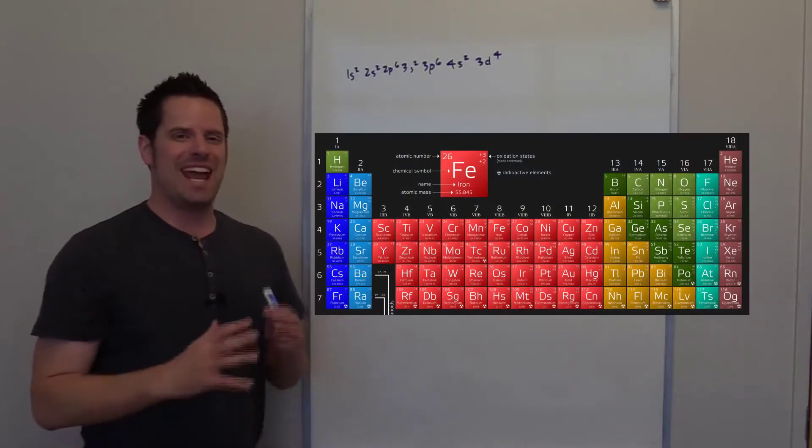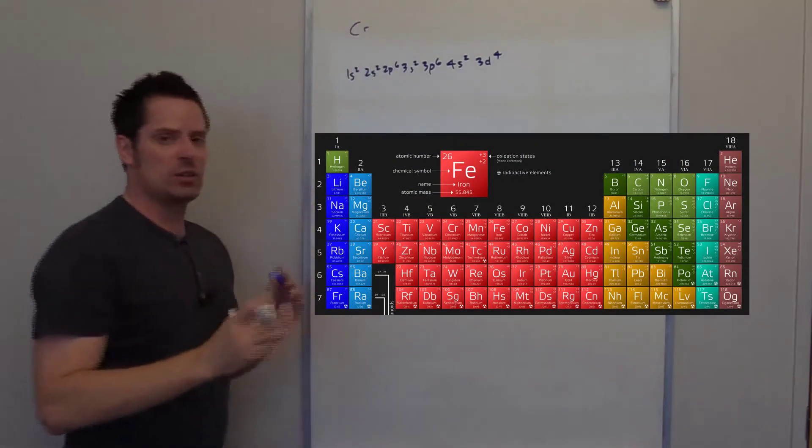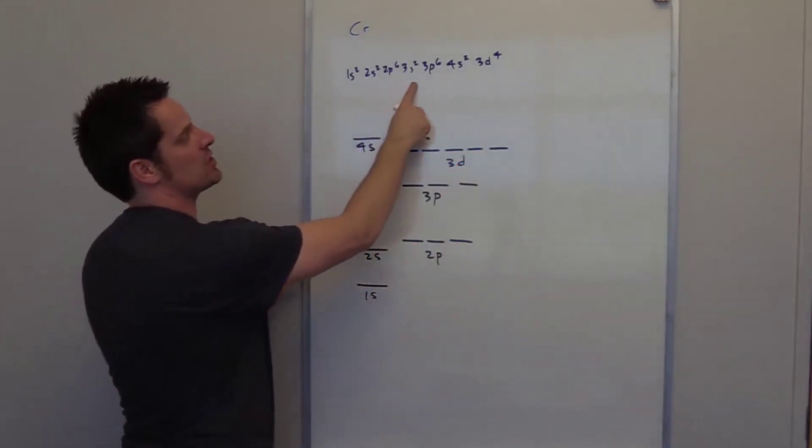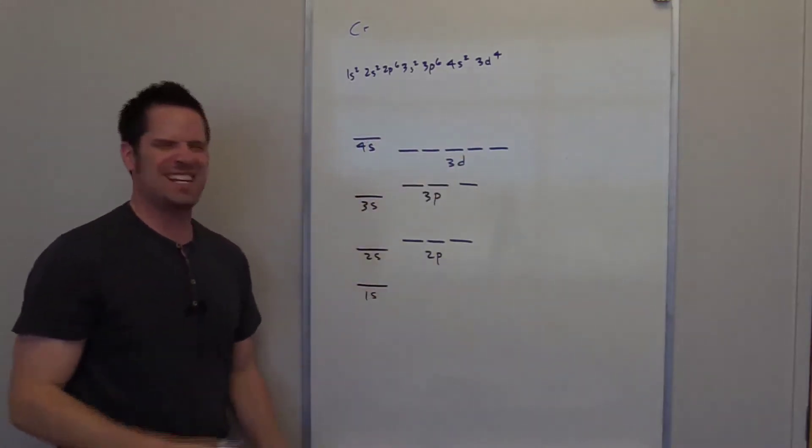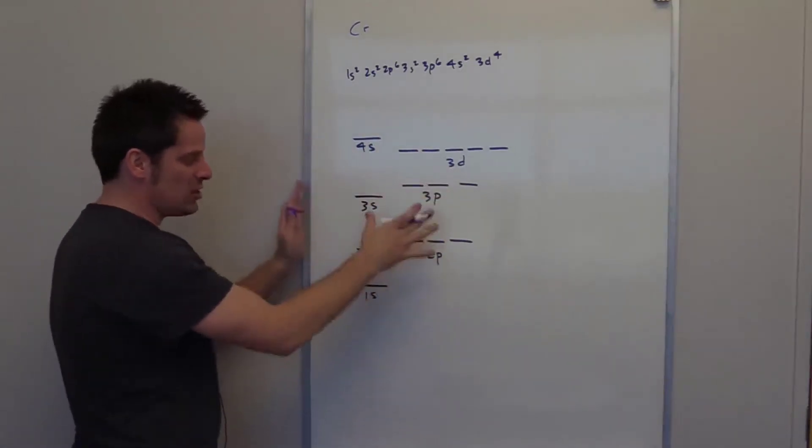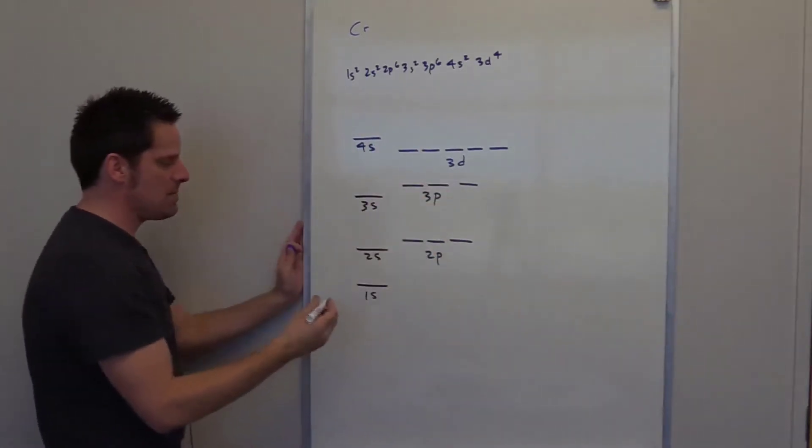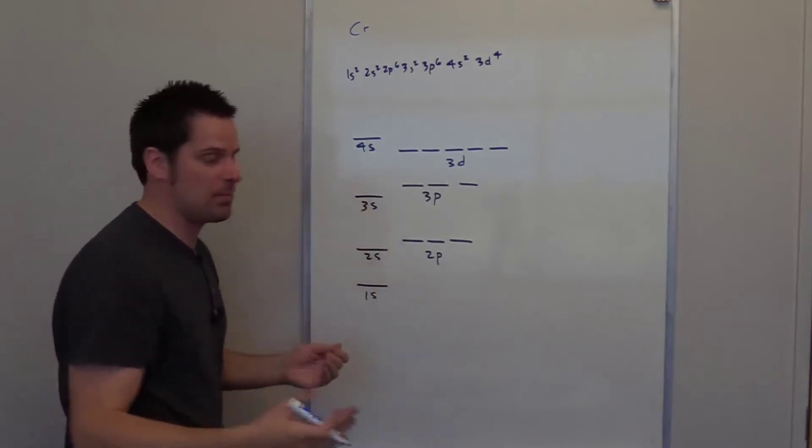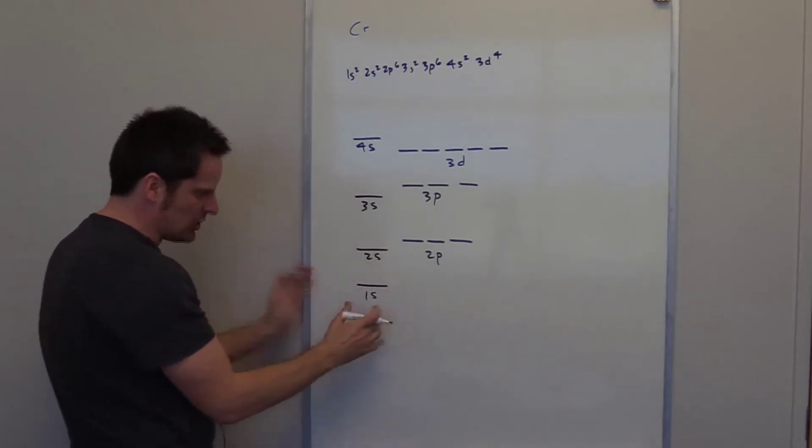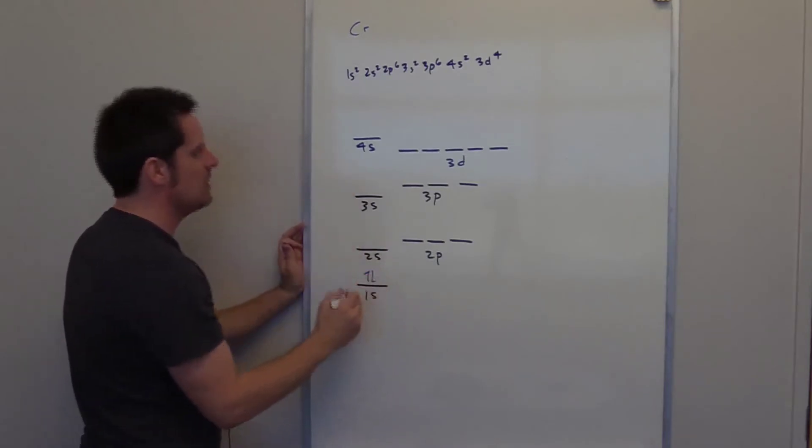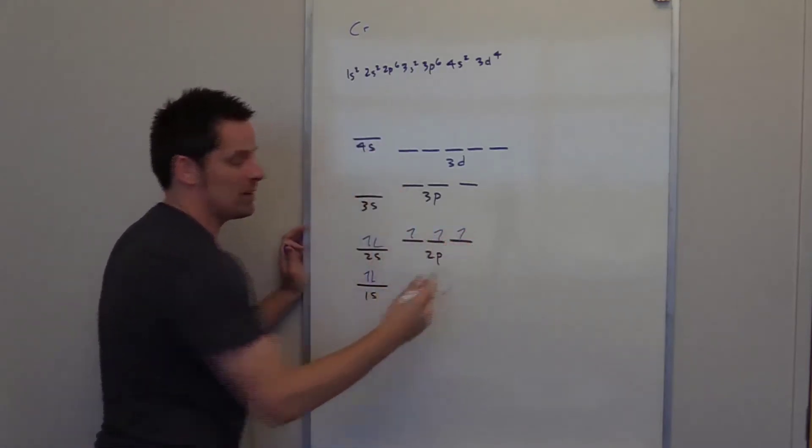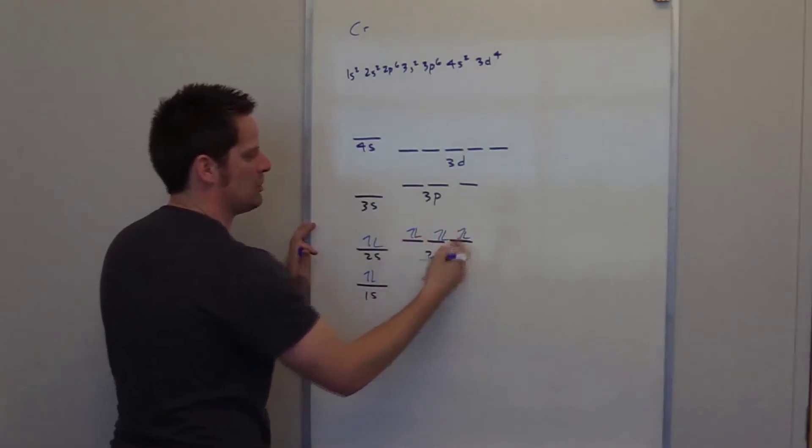If you look at the periodic table and analyze chromium more carefully, you'll see that its full electron configuration is, or you would think at least, it would be 1s2, 2s2, 2p6, 3s2, 3p6, 4s2, 3d4. Now, that's actually not what it is, but you'd think that it would be that. So if I actually draw a little orbital energy diagram like this and fill this up, I, of course, fill from the bottom up, that's the Aufbau principle, and I don't pair until I have to.